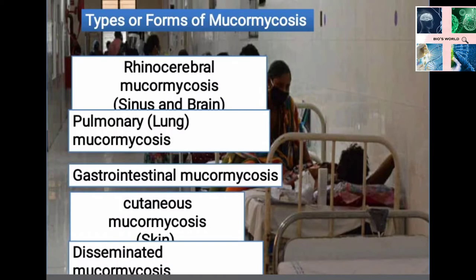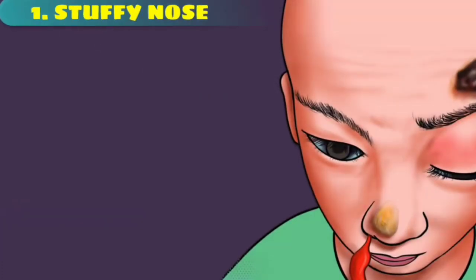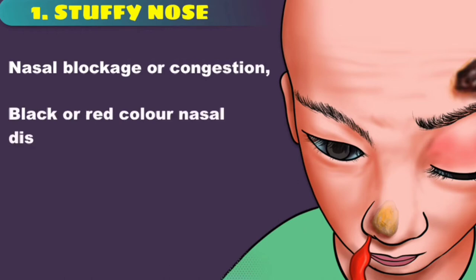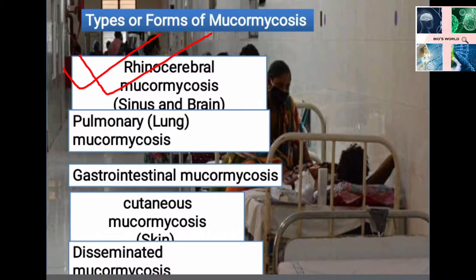Depending on the site of infection, mucormycosis is divided into 5 types. The first is rhinocerebral mucormycosis. It is a condition caused by filamentous fungi of the mucorales which affect the paranasal sinuses, nose and brain. The disease is most acute but can become chronic as the fungus grows rapidly and aggressively. It is the most common form of mucormycosis. The infection begins in the nasal cavity and slowly moves to the adjacent paranasal sinuses.